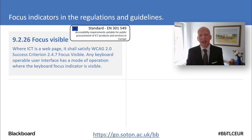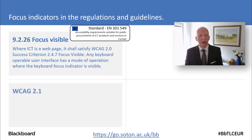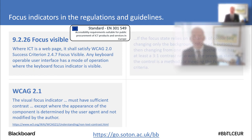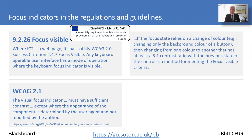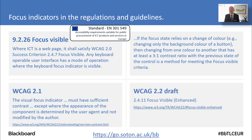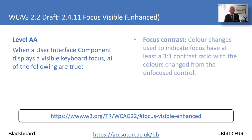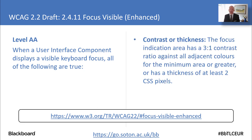How does that apply to the regulations? In the European standard the focus indicator has to be visible. Furthermore, in WCAG 2.1 they say the focus indicator should have sufficient contrast so that you can see it, and if the state relies on a change of colour then you've got to consider the contrast as well. In the draft of WCAG 2.2 there is a new test for focus visibility at the enhanced level — there are details about the size, colour contrast, and thickness, requiring at least a 3 to 1 contrast ratio. In WCAG 2.2 it's much more explicit about this.